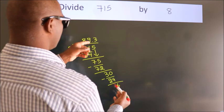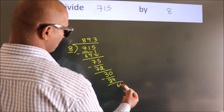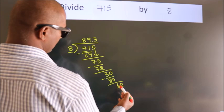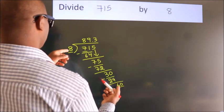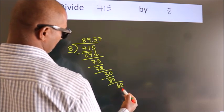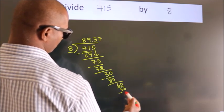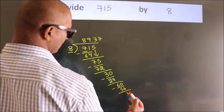After this, we already have the decimal, so directly take 0, making 60. A number close to 60 in the 8 table is 8 times 7 equals 56. Now we subtract and get 4.